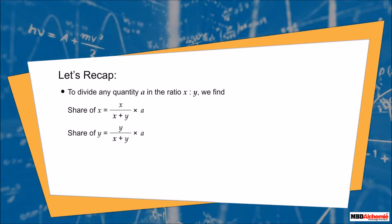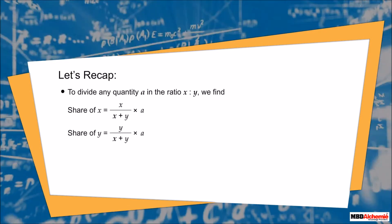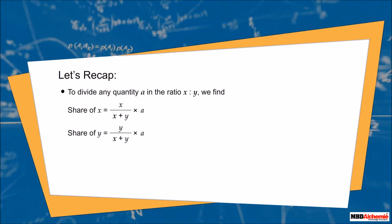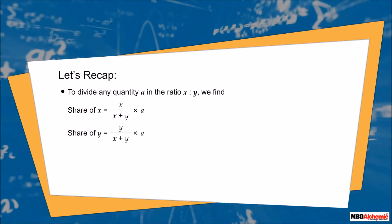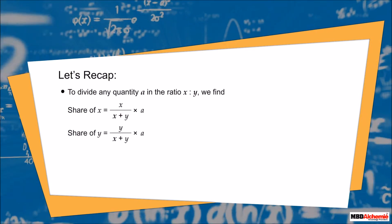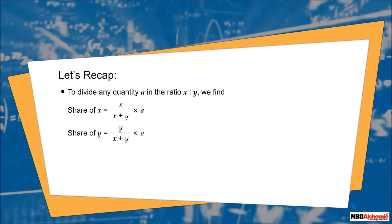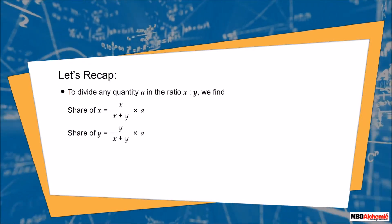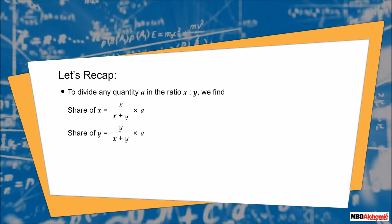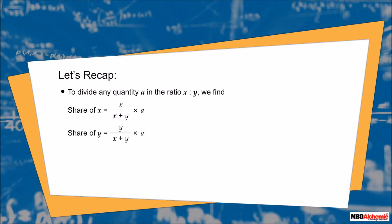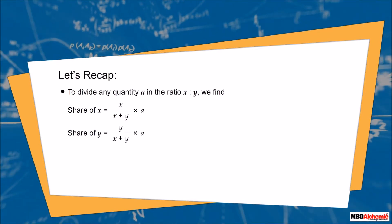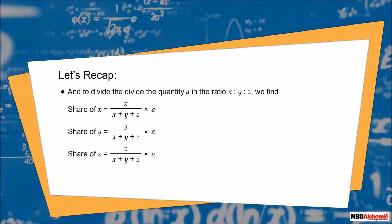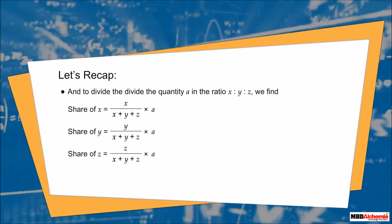Let's recap. To divide any quantity A in the ratio x to y: the share of x is equal to x divided by (x + y), multiplied by quantity A. The share of y is equal to y divided by (x + y), multiplied by quantity A.